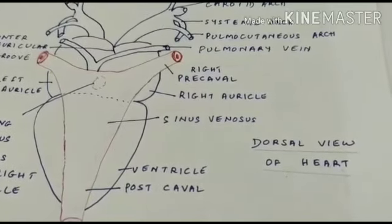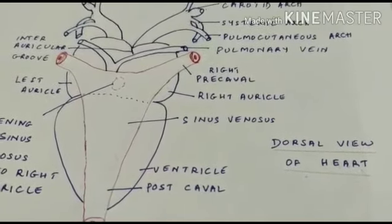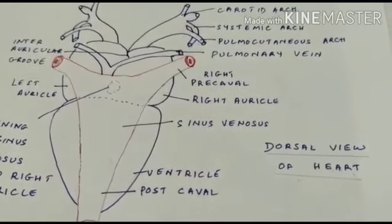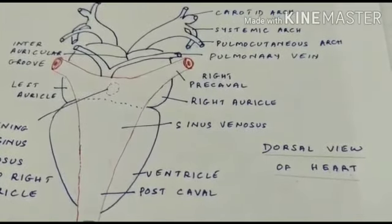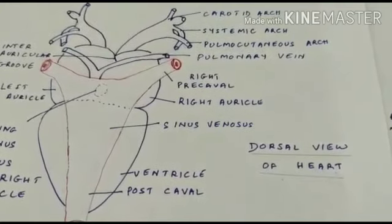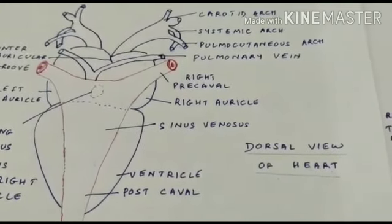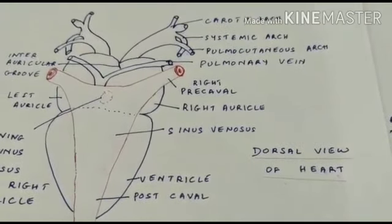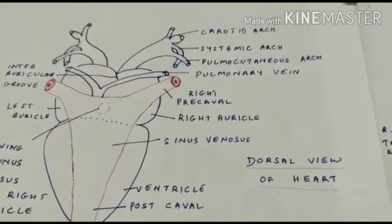In other words, the right auricle receives the deoxygenated blood and the left auricle receives the oxygenated or pure blood. The sinoauricular node, or pacemaker, initiates the contraction of the right auricle. This specialized part from where contractions begin is called the myogenic pacemaker, and such a heart is called a myogenic heart.